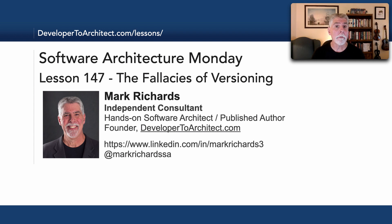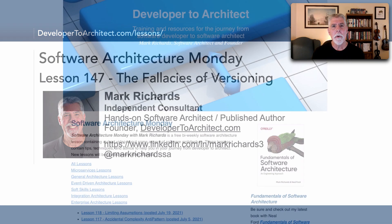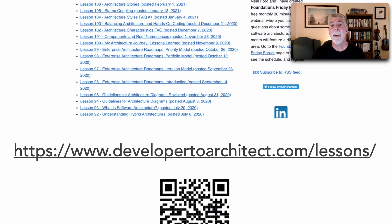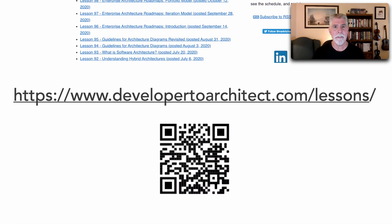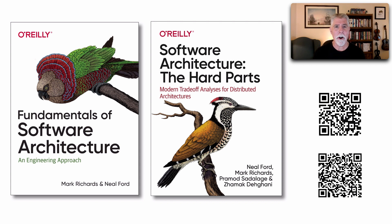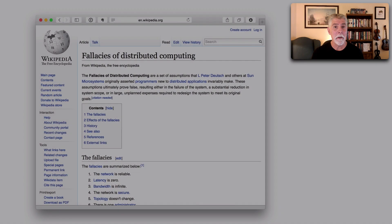Hello everyone and welcome to Software Architecture Monday. My name is Mark Richards and in this lesson, number 147, we'll talk about the fallacies of versioning. You can find a listing of all the lessons I do in Software Architecture Monday through my website at developer2architect.com/lessons. Much of the material I do, especially of late, does come from two books I wrote with my friend Neil Ford: Fundamentals of Software Architecture and Software Architecture: The Hard Parts. Today we're going to talk about fallacies, and one in particular.